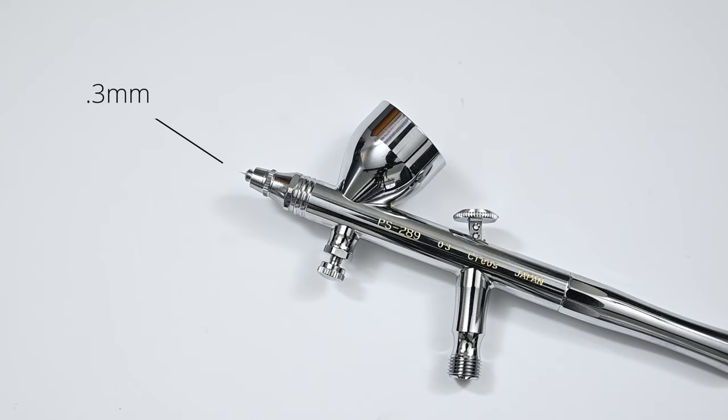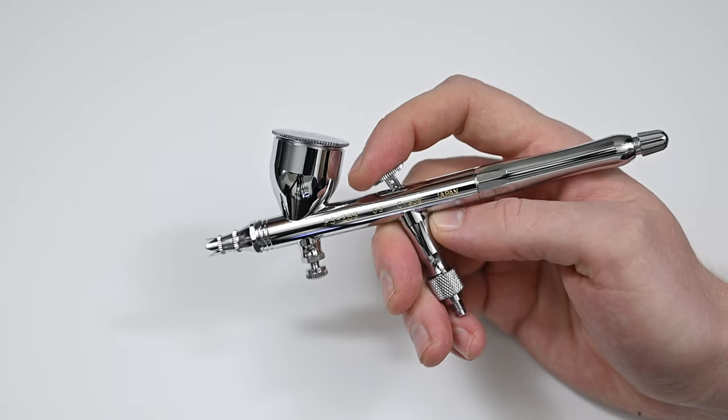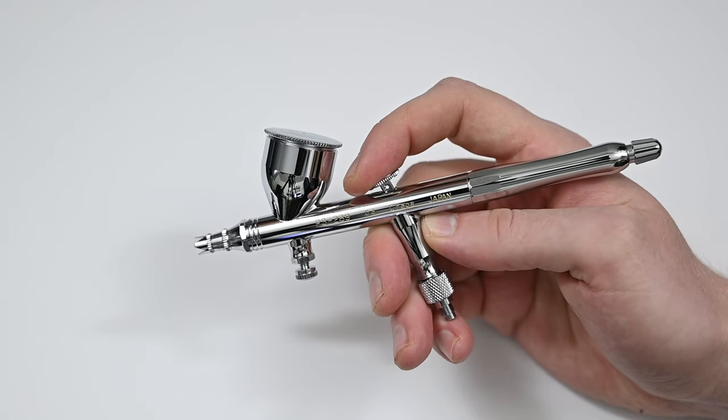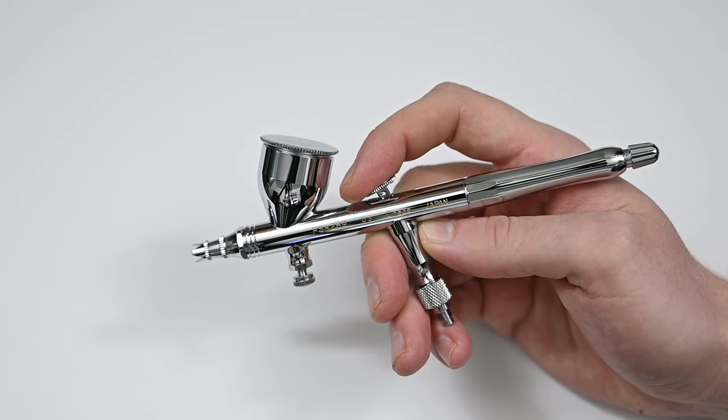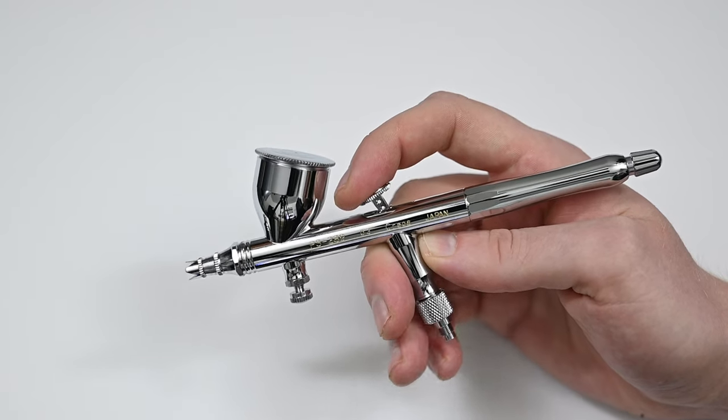As a general-use airbrush, the 289 is equipped with a 0.3 millimeter needle and nozzle. This is an excellent nozzle size, which is perfect for detail work, but also it's better and more forgiving for spraying unreduced paint compared to a detail airbrush. So you're kind of getting the best of both worlds with this airbrush.